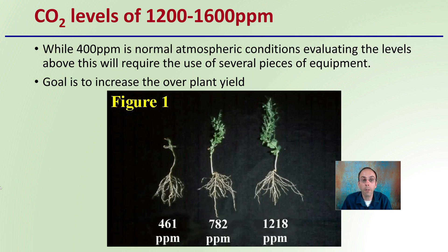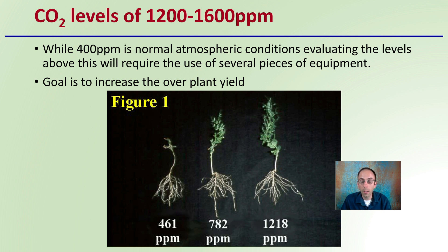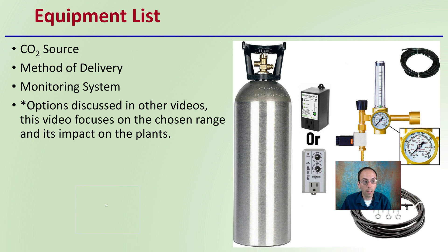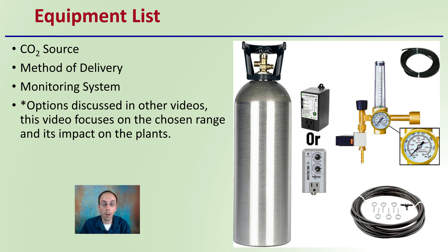Keep in mind that 400 parts per million is normal atmospheric conditions, and elevating the levels above this will require the use of several pieces of equipment. The goal is to increase overall plant yield — as we can see here, closer to atmospheric conditions, the same plant grown in just over 1,200 parts per million shows a much larger amount of biomass accumulated.